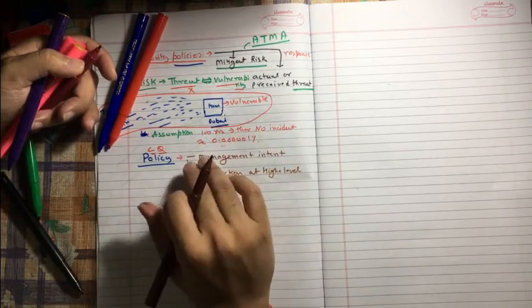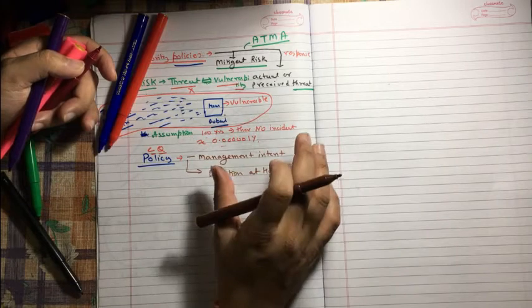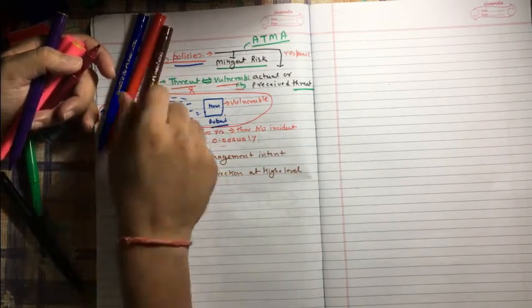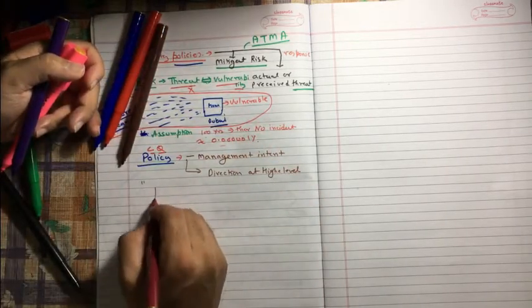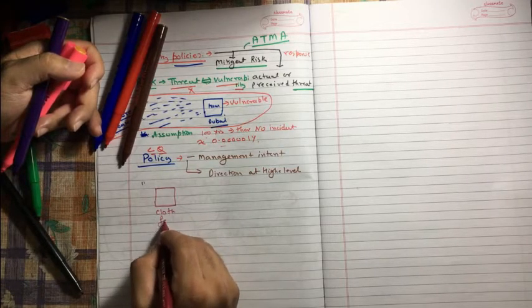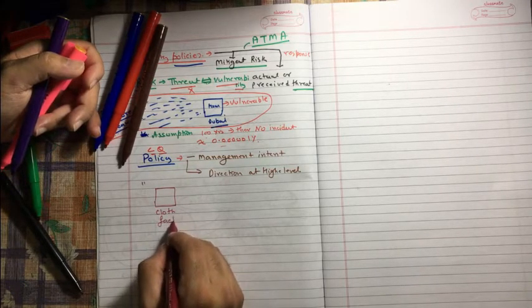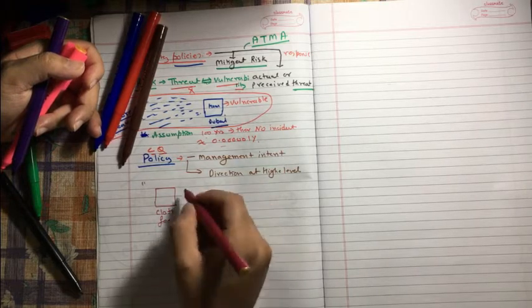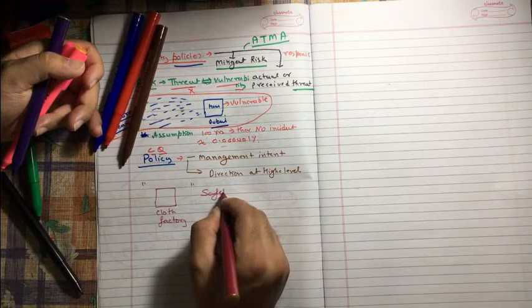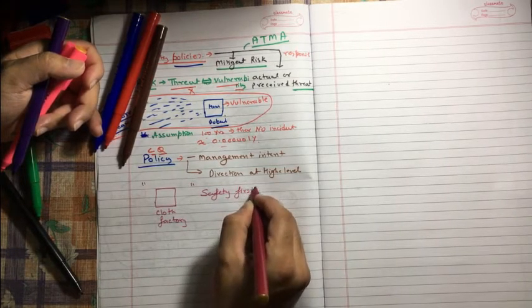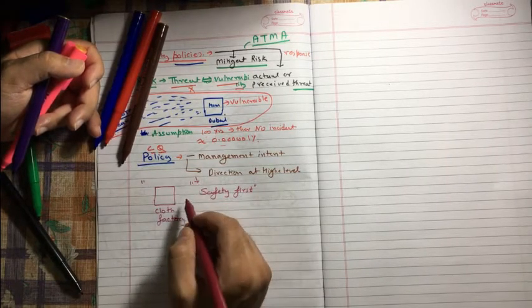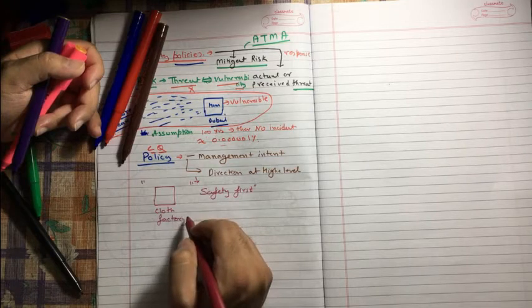What does it mean? It means policy mentions what management is expecting on a high level. For example, there is a factory - a clothes factory where we are manufacturing clothes. There is a policy saying 'safety first'.